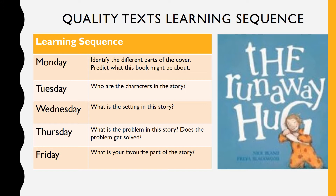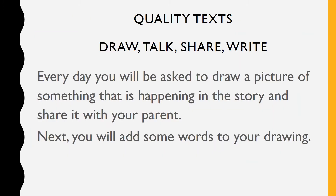On Monday, we will identify the different parts of the cover and we will predict what this book might be about. On Tuesday, we will look at the characters in the story. Wednesday is about looking at the setting of the story. On Thursday, we'll find out about the problem and how the problem gets solved. And on Friday, we're going to talk about our favourite part of the story. Remember that every day you'll be asked to draw, talk, share and write.